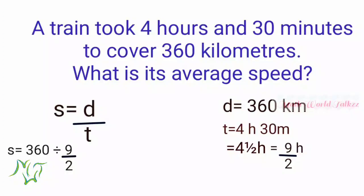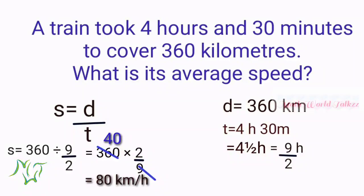S is equal to 360 divided by 9 by 2. In the next step we write 360 multiplied by the reciprocal, which is 2 by 9. Since 9 goes 40 times into 360, then 40 into 2 is equal to 80 kilometers per hour.